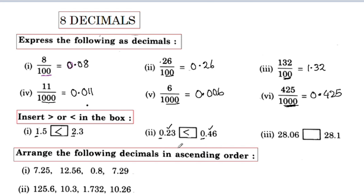Here we have the same digit, and here we have the same digits. Here we have 2 digits — here is 28. We check the decimal point on the right. Here is 0, here we have 1, and here we have 1. Here is greater than 28.1. Here is greater.